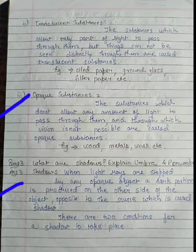When light rays are stopped by any opaque object, a dark portion is produced on the other side of the object, opposite to the source, which is called shadow.